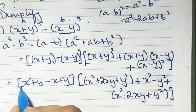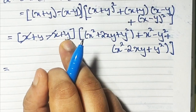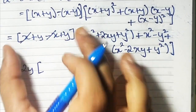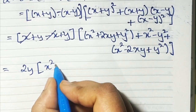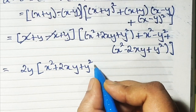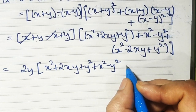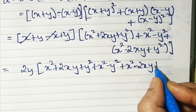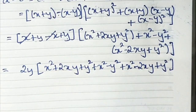Here plus x and minus x get cancelled. 1y and 1y gives 2y. Now opening the big bracket: x square plus 2xy plus y square, plus x square minus y square, plus x square minus 2xy plus y square.